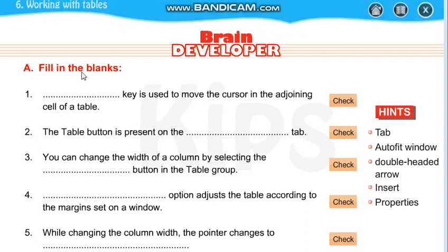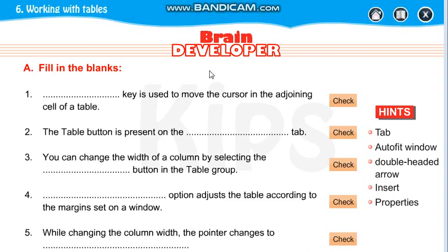Quickly we are going to see the hints. The hints are: Tab, auto fit window, double headed arrow, insert, and properties. Now, the dash key is used to move the cursor in the adjoining cell of the table.